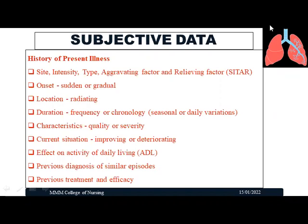If the patient comes with some symptoms, we need to identify the site — where the problem is — the intensity or severity, the type, the aggravating factor, and the relieving factor. We also need to identify the onset — whether sudden or gradual — the location, whether it radiates to some part of the body. For example, cardiac chest pain may radiate to the shoulders or hands, whereas respiratory chest pain will not radiate. We also assess duration, frequency or chronology, whether there is any seasonal variation, and characteristics or quality of the problem.